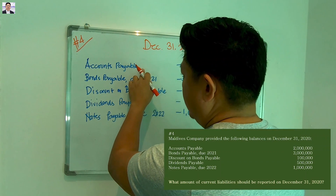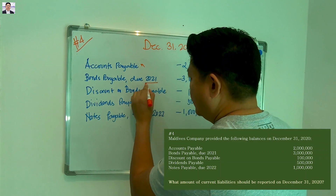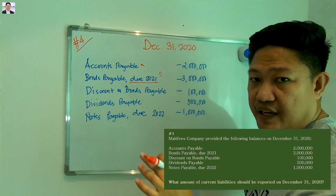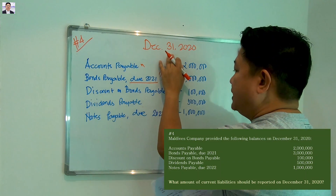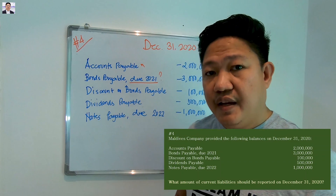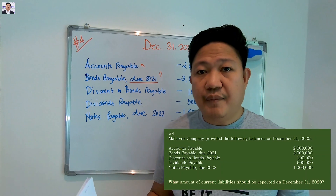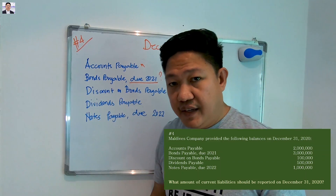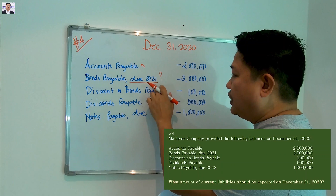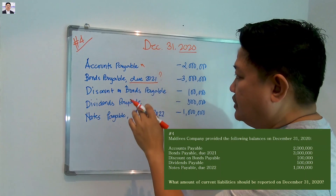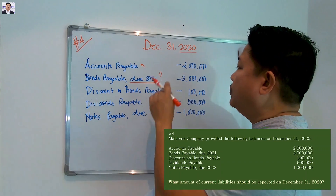The second item is bonds payable of 3 million, which is due in 2021. Do we include this in current liability? Yes, because today is December 31, 2020 — this will be paid within 12 months from the statement date, so it will be reclassified as current liability. Usually bonds payable is a long-term liability, but since the problem gave a due date in 2021, and we are preparing the financial statement for 2020, we must pay this within 12 months from the statement date.